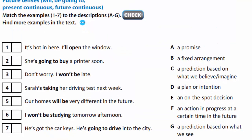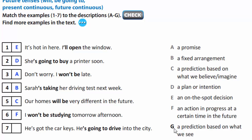Now let's match the examples to the descriptions. 1. It's hot in here – I'll open the window. Letter E – an on-the-spot decision. 2. She's going to buy a printer soon – D, a plan or intention. 3. Don't worry, I won't be late – a promise (A). 4. Sara's taking her driving test next week – B, a fixed arrangement. 5. Our homes will be very different in the future – C, a prediction based on what we believe or imagine. 6. I won't be studying tomorrow afternoon – F, an action in progress at a certain time in the future. 7. He's got the car keys – he's going to drive into the city – G, a prediction based on what we see.